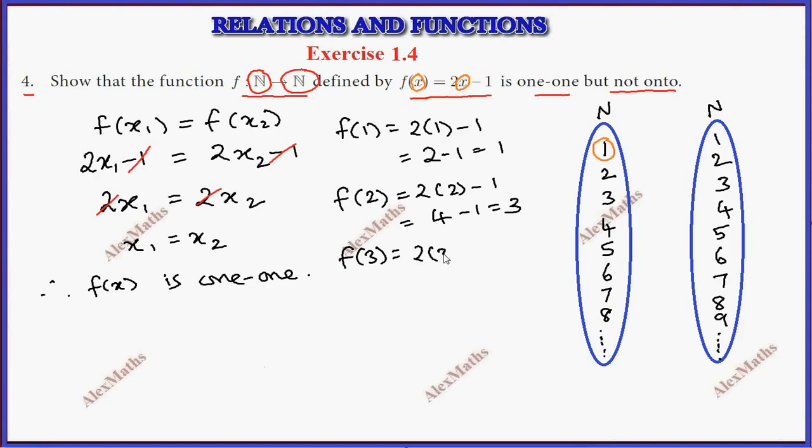So 6 minus 1 which is 5. f(4) equals 2 times 4 minus 1, 8 minus 1 which is 7. If you want to make an arrow diagram map, 1 maps to 1, 2 maps to 3, 3 maps to 5, 4 maps to 7.